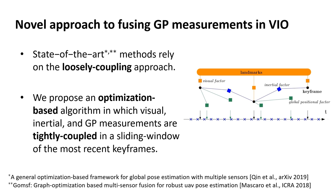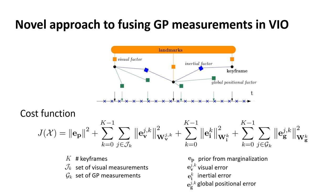We propose in this work an optimization-based tightly coupled approach, where the visual, inertial, and global positional measurements are jointly optimized in a sliding window containing the most recent keyframes. The proposed cost function contains four different types of residuals: the prior error obtained from the marginalization of the old states, the visual reprojection error, the inertial error, and the global positional error.